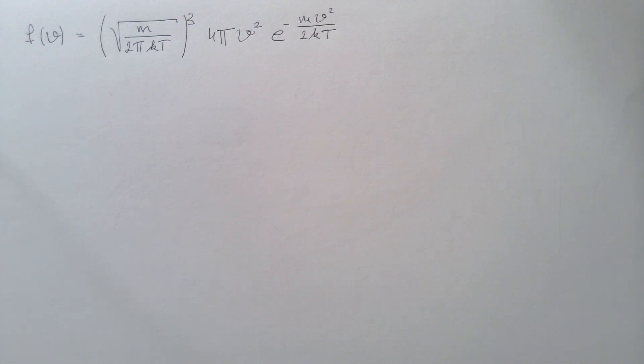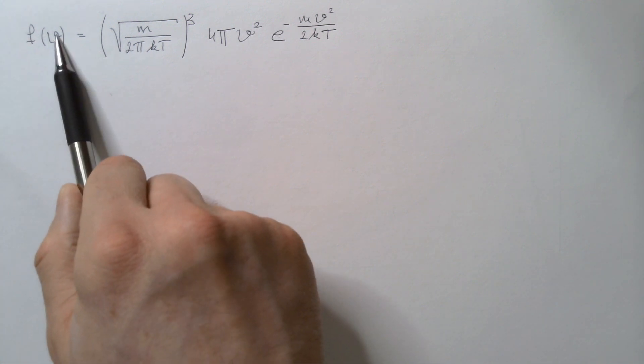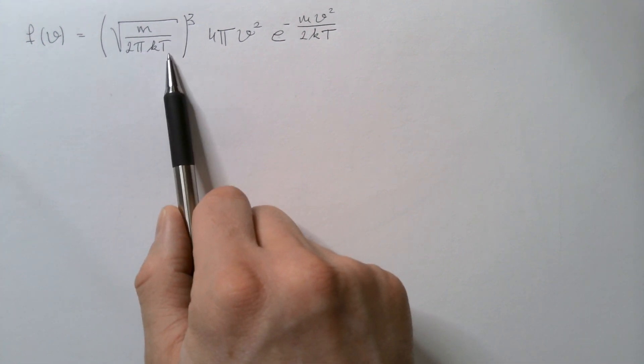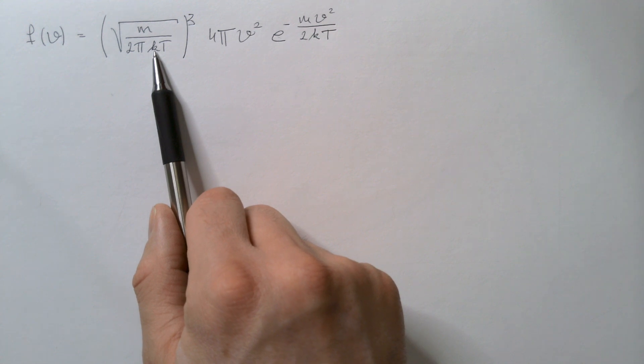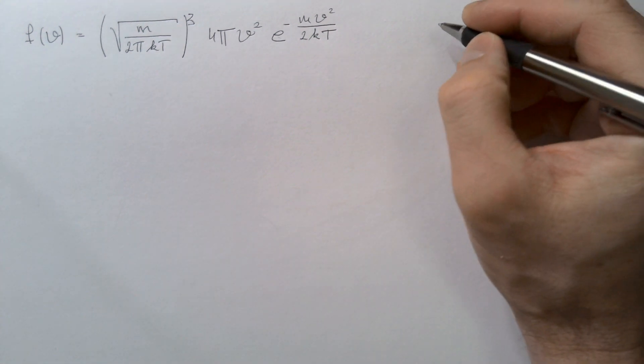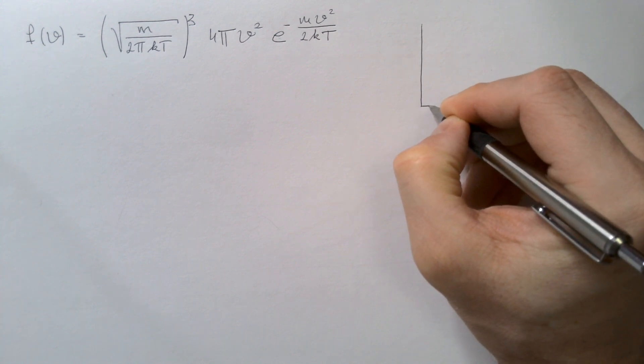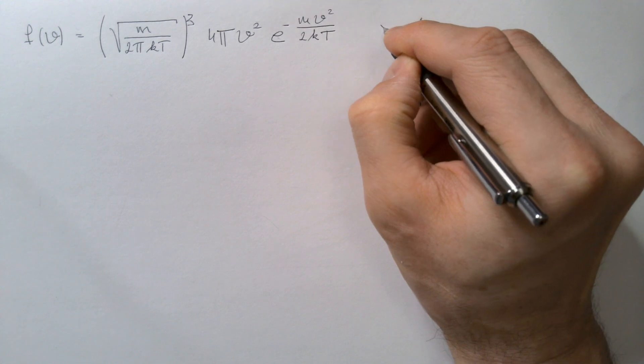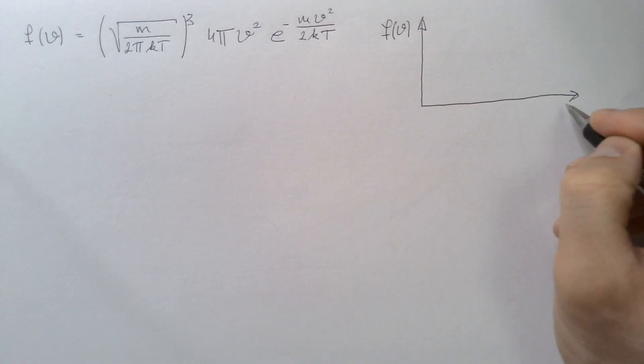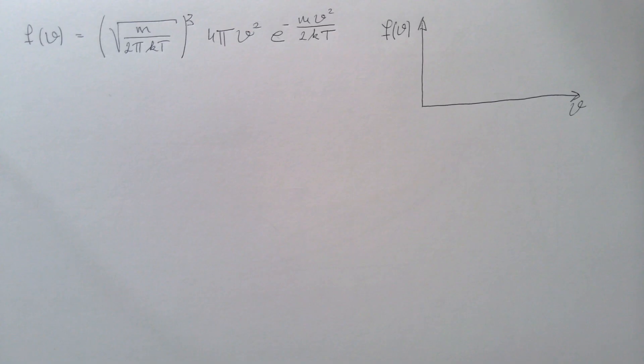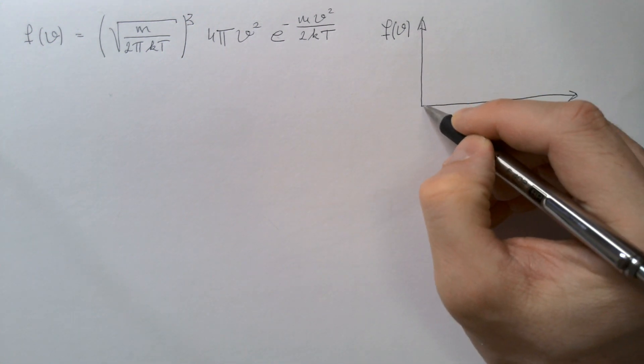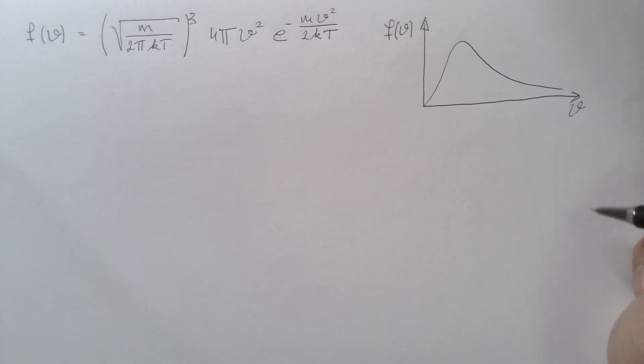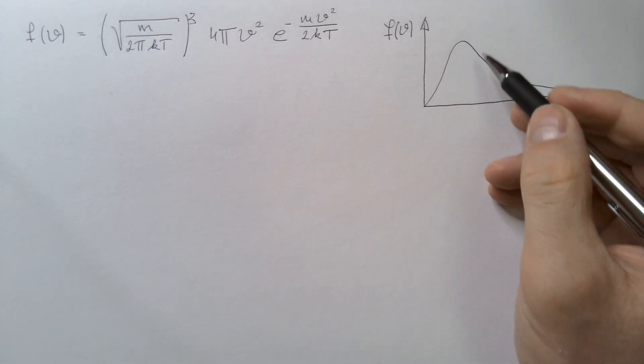We will start from Maxwell-Boltzmann distribution of speeds, where f(v) is probability density function of speeds of atoms, m is their mass, t is absolute temperature, k is Boltzmann constant. Let us first sketch how this distribution looks like. We discussed it in great details in my previous video. Here is probability density function f(v), and here is our random variable speed of atoms v. We saw that the distribution function might look like this. It is positively skewed or skewed to the right.